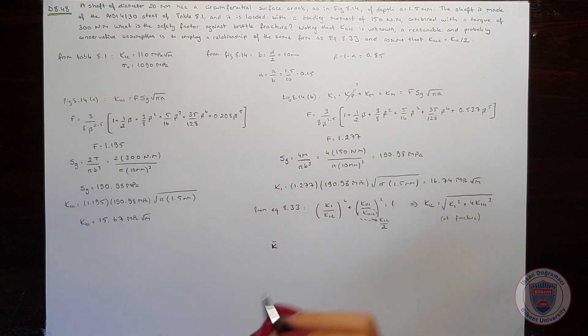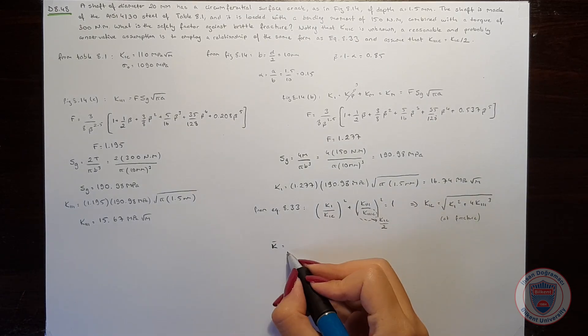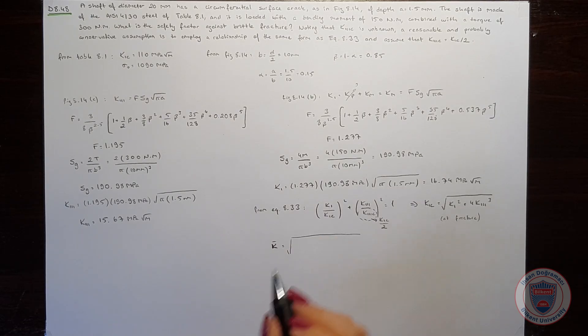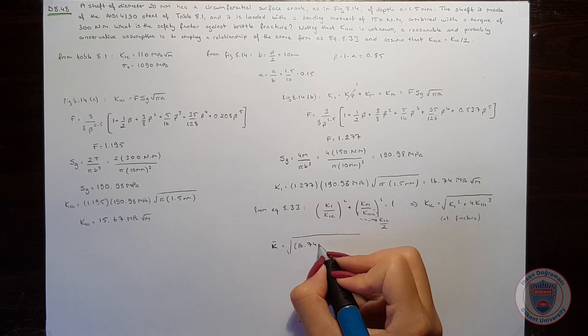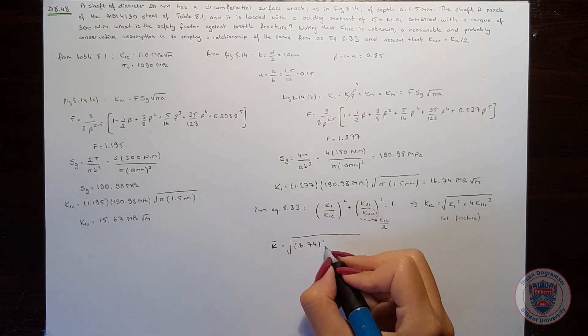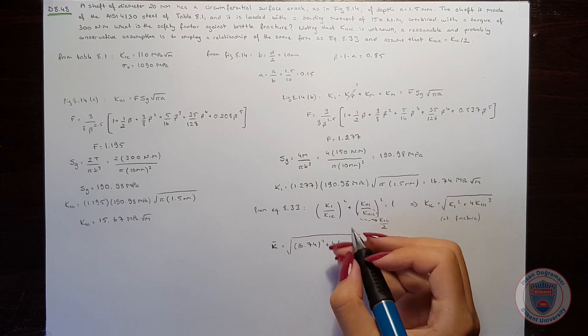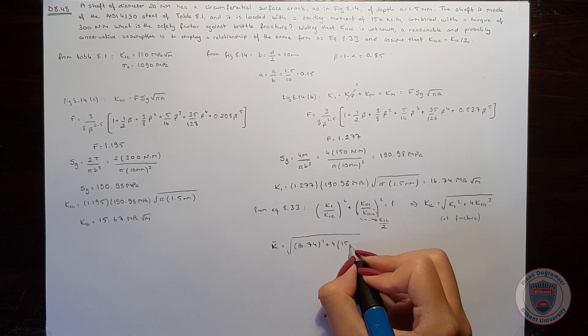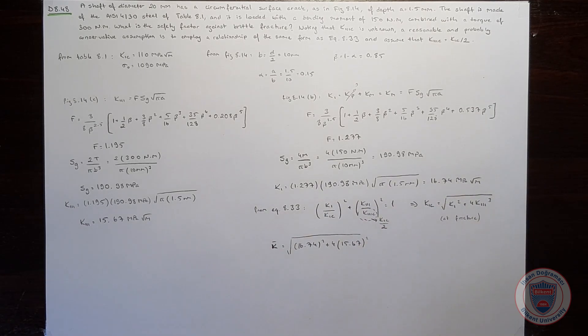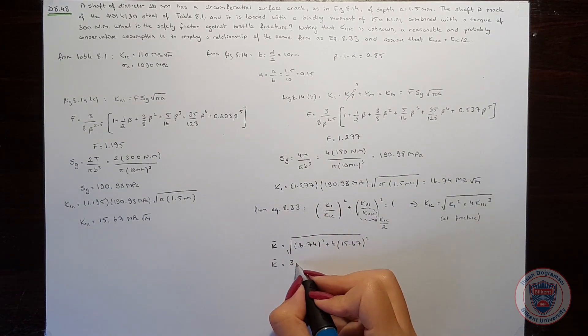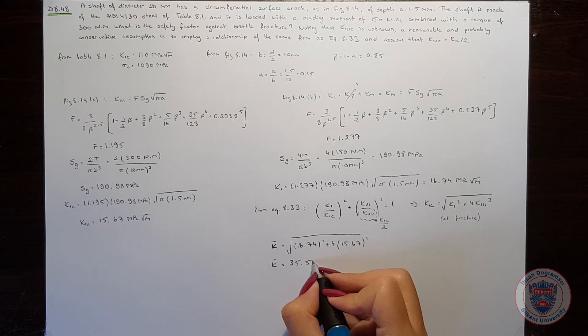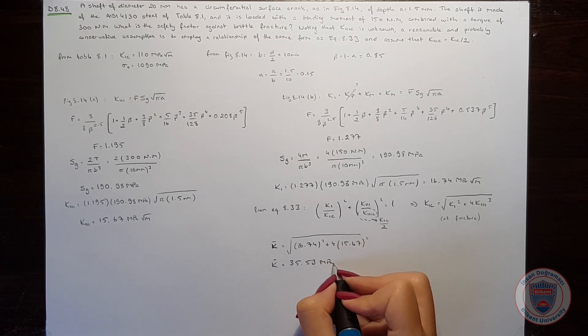To calculate the safety factor against brittle fracture, we define K-bar as the square root of K1 squared (16.74 squared) plus 4 times K3 squared (15.67 squared), giving us K-bar equals 35.53 MPa square root meters.